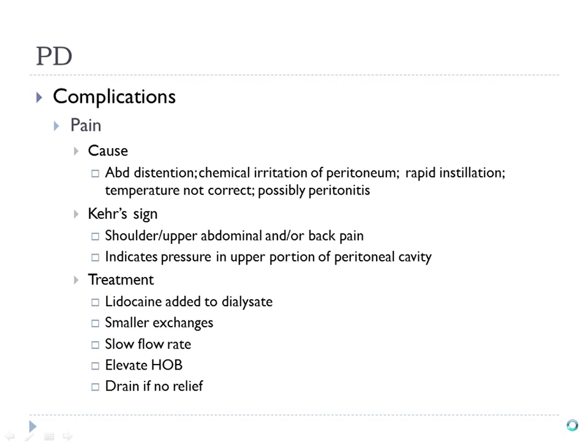The first intervention you would do if a patient exhibited Kehr's sign is to sit them up. By sitting them up, you decrease the pressure on the upper abdomen and move everything down. If the patient still has no relief after these interventions, drain the dialysate out of the patient.